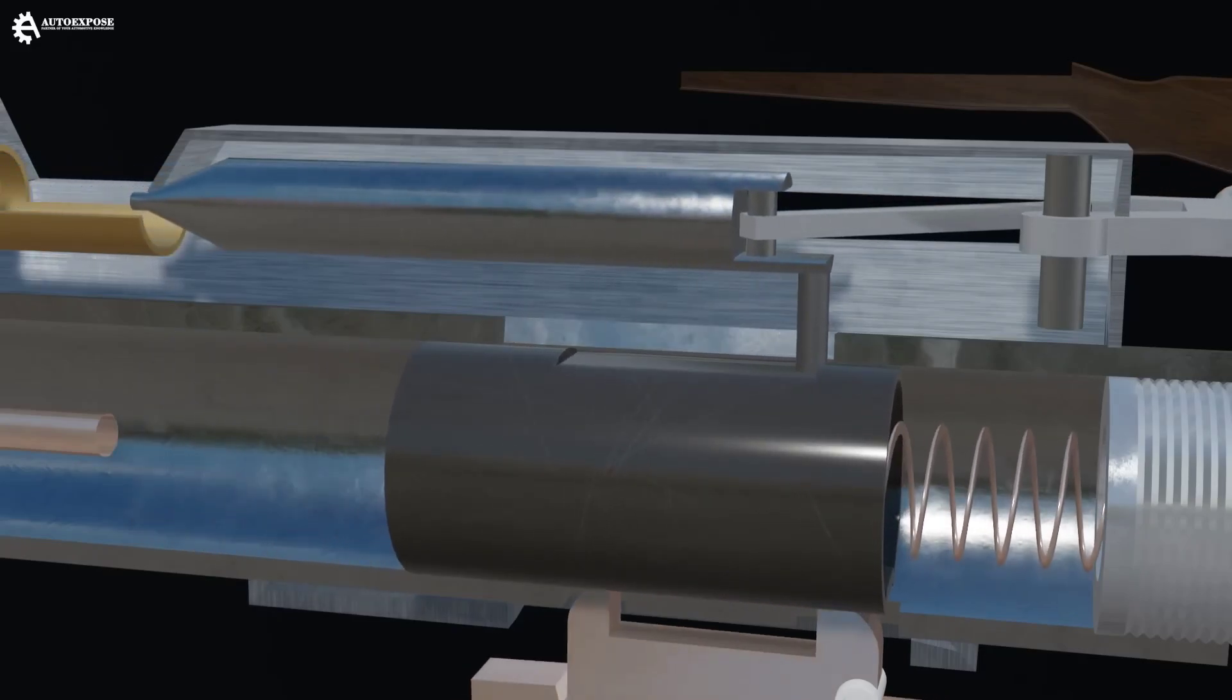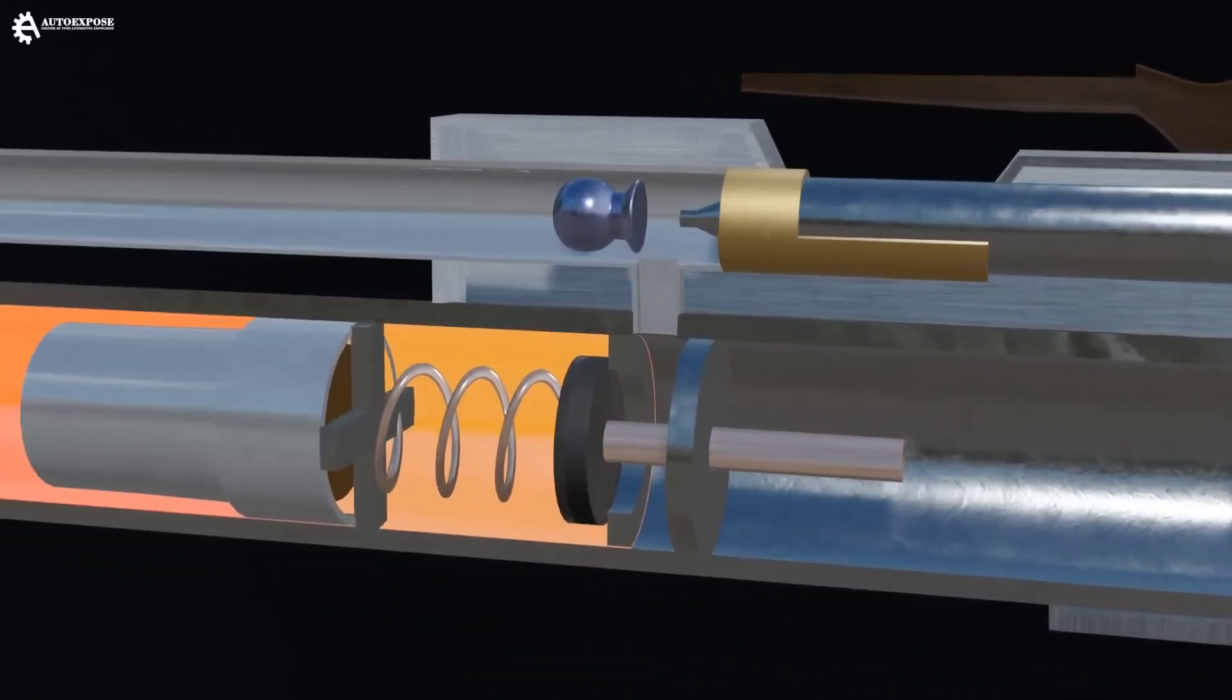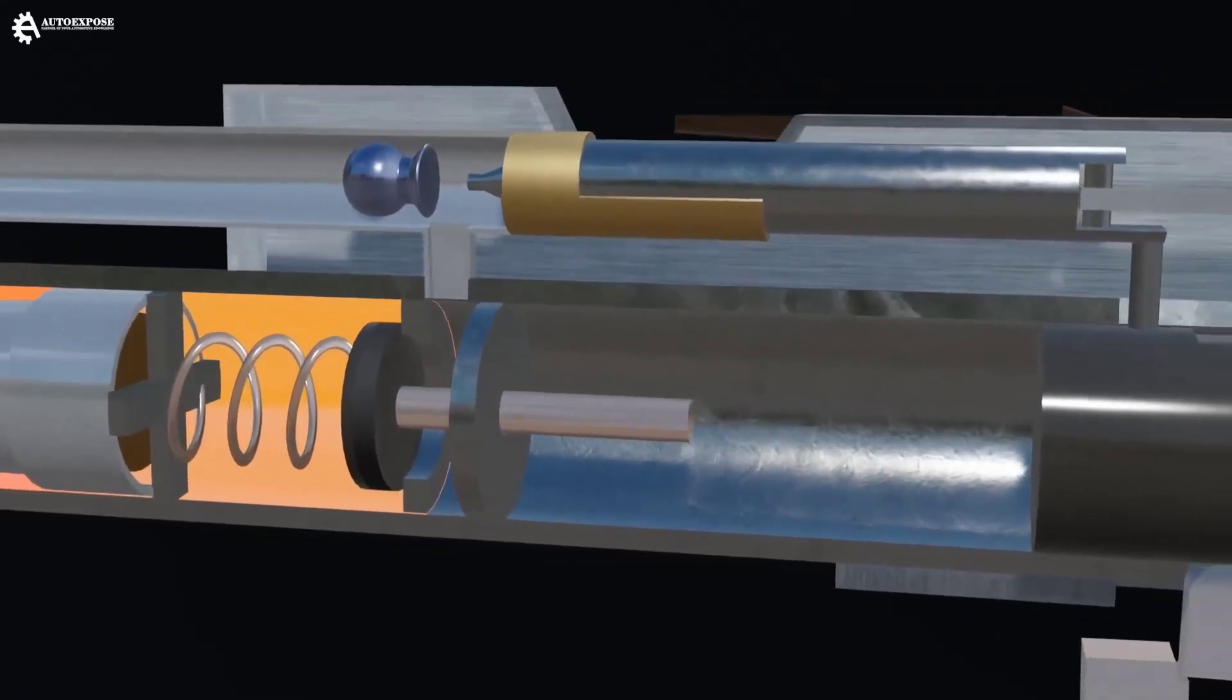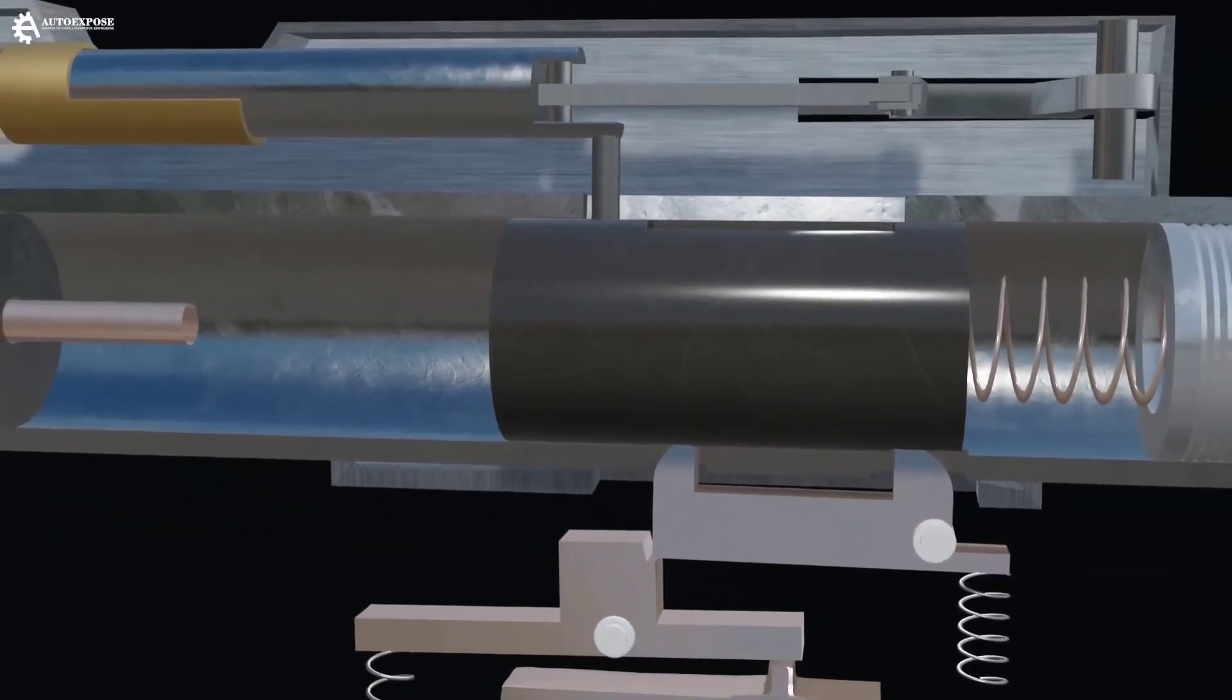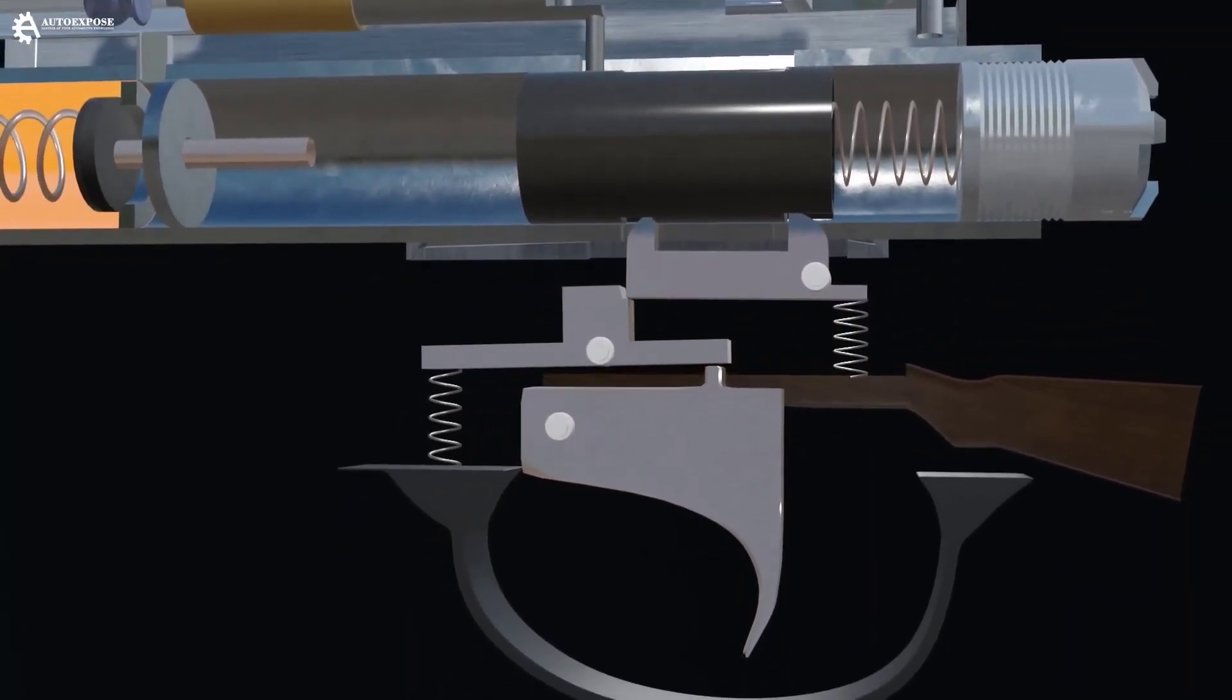The push rod also has a hook. When this rod moves backward, this hook will pull the hammer piston. So, when we pull the lever, there are two mechanisms that are triggered. First, the bullet is inserted into the sleeve, and second, the hammer piston is pulled back.